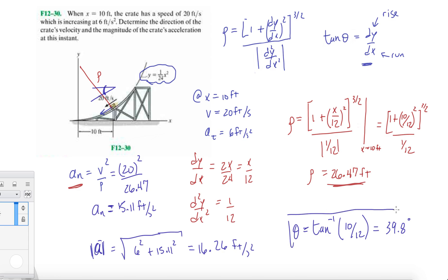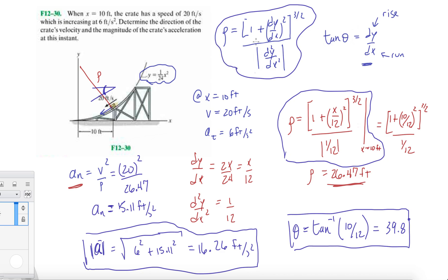We have our angle of the direction of the velocity and we have the magnitude of our acceleration. This is not something you want to just memorize. If you memorize it, good for you, it'll save you time. But this equation, if you have a cheat sheet, you can just bring it with you and write it there.